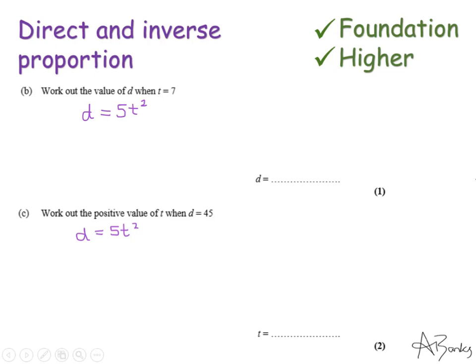Now this question has a part B and C. They're now wanting me to use that formula I've just found in part A to work out some other values of d and t. So the first part says, work out the value of d when t is 7. So I've just got to substitute 7 into this formula. So d equals 5 times 7 squared. So 7 squared is 49. And 5 times 49 is 245. So when t is 7, d is 245.